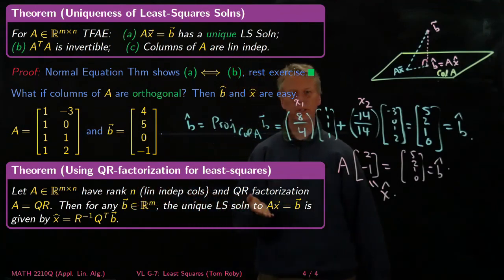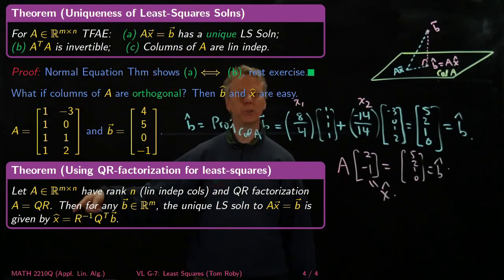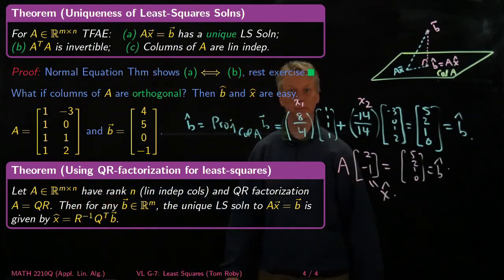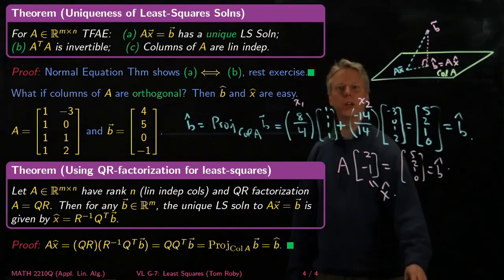Then, for any B in R^m, the unique least square solution to Ax equals B is given by, I can just write down a formula, x hat equals, take the inverse of R, times the transpose of Q times B. And what's nice about this theorem is that there's not much left to do, given all the machinery we've already built up. So here's the one-line proof.